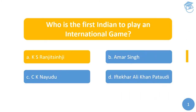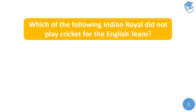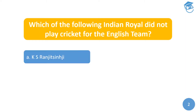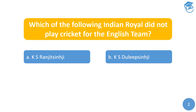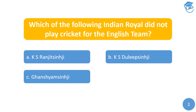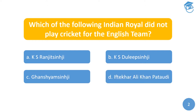Moving on, the second question: Which of the following Indian royals did NOT play cricket for the English team? Options are: A) Ranjitsinhji, B) Duleep Sinhji, C) Gansham Sinhji, or D) Iftikhar Ali Khan Pataudi.